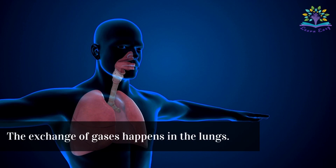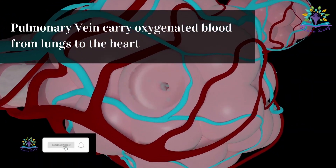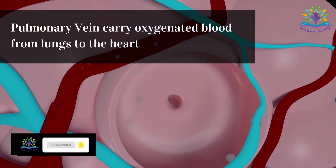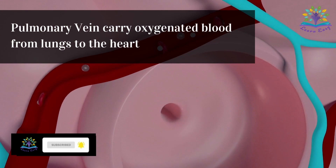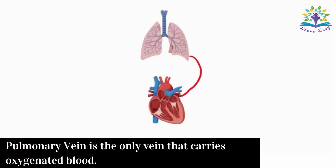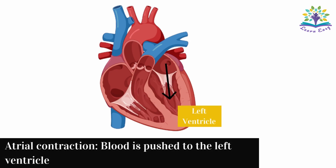The exchange of gases happens in the lungs. The oxygen-rich blood is then carried from the lungs to the heart through the blood vessel's pulmonary vein. Please note that this is the only vein that carries oxygenated blood.